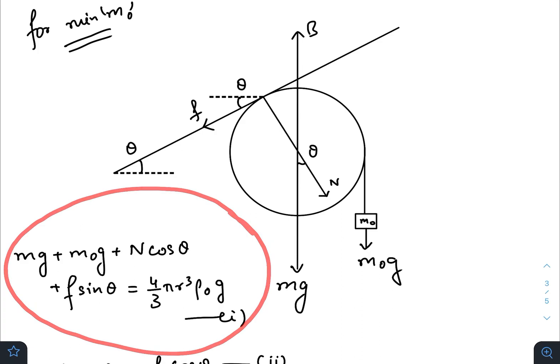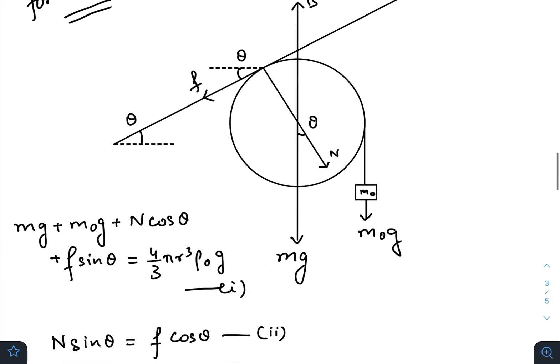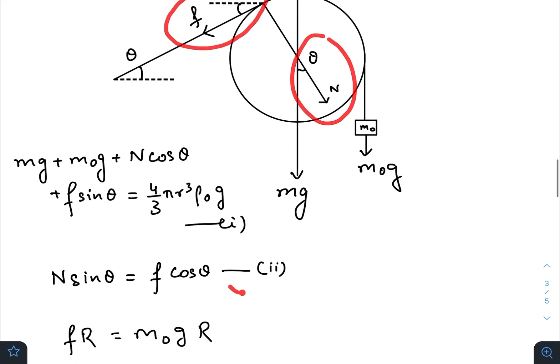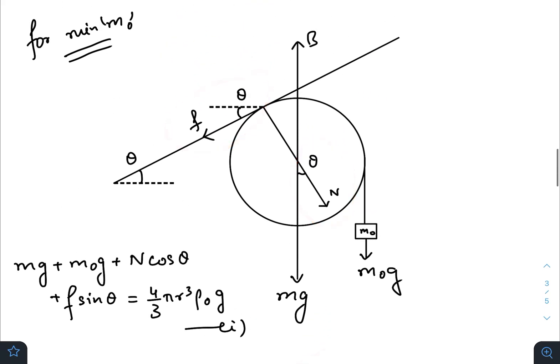So the upward force, that is the buoyancy, is balanced by n cos theta, mg, m0 g and the downward force of friction, that is f sin theta, fine. So this is the first equation, balancing the vertical forces. Balancing the horizontal forces, n sin theta will be equal to f cos theta.